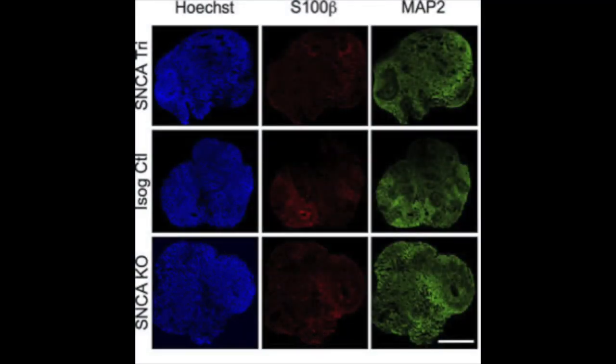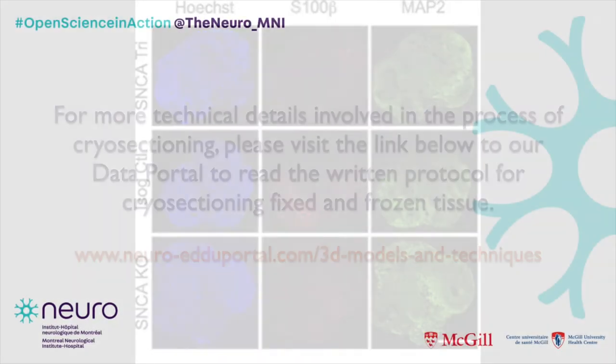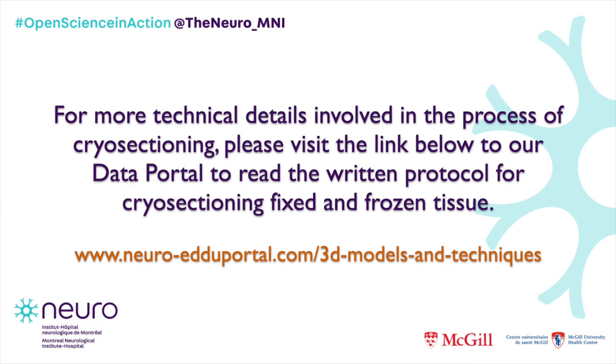Once your cryo sections are done, you can stain them with different antibodies to visualize your proteins of interest. Here we have 50-day-old human midbrain organoids of synuclein triplication lines, control lines, and synuclein knockouts stained for neurons, astrocytes, and nuclei. For more technical details involved in the process of cryosectioning, please visit this link to our data portal to read the written protocol for cryosectioning fixed and frozen tissue.